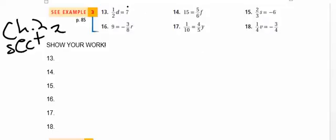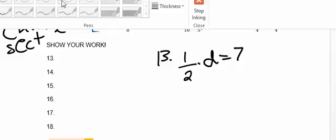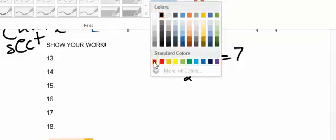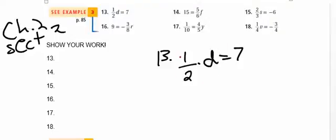So number 13 says one half times D equals 7. All you need to do is figure out how to get rid of the denominator there. The way that we get rid of multiplying by a fraction is to multiply by its reciprocal. So we will multiply both sides by the reciprocal of one half, which is 2 over 1, and 2 over 1 is the same as 2.